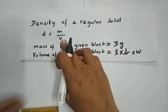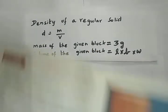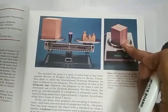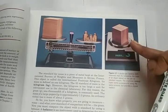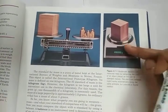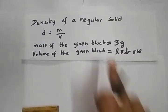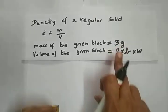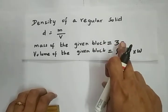We can use a double pan balance or electronic balance to find the mass of any substance. I found the mass of this block using the electronic balance as 3 grams.